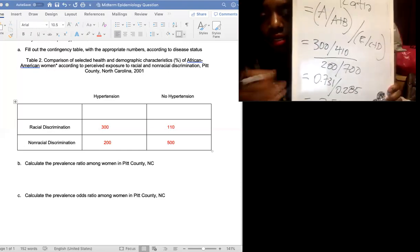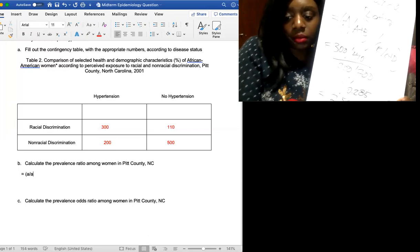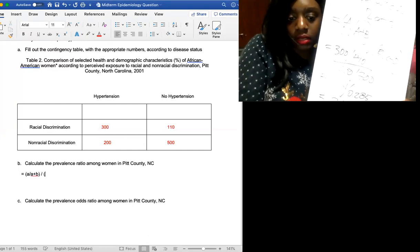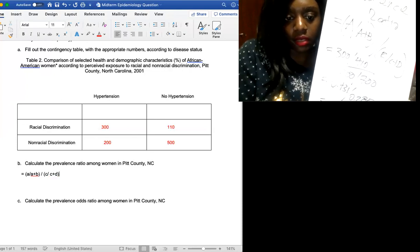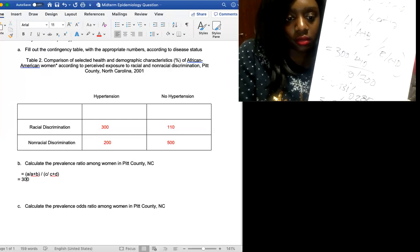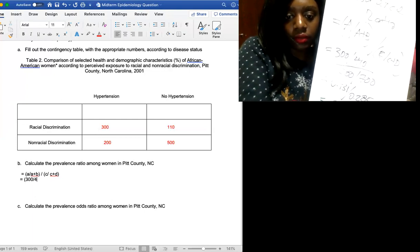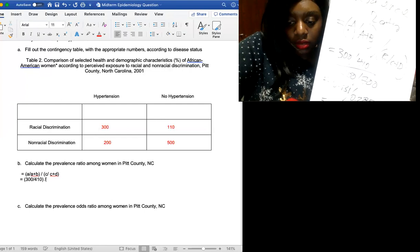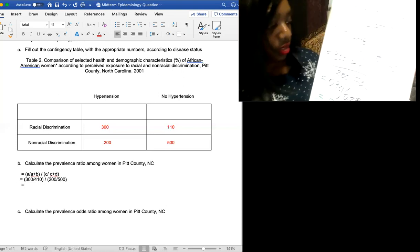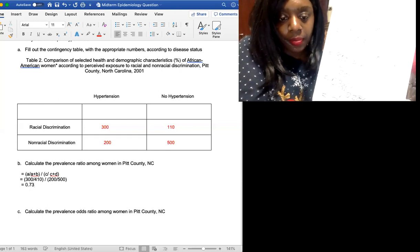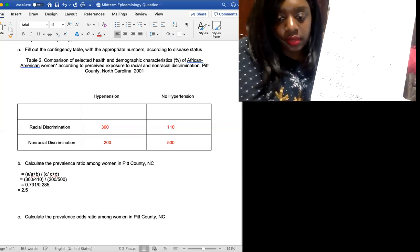And that's the problem worked out. And I'll finally type it up for you all as well. The equation was prevalence ratio is equal to a divided by a plus b divided by c divided by c plus d. Then you have 300 divided by 410 divided by c, 200 divided by 500. And on the board here, we have the same calculations. So we have 0.731 divided by 0.285. And that gives us 2.56.